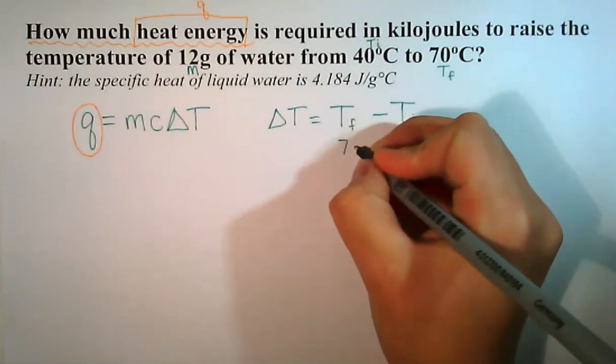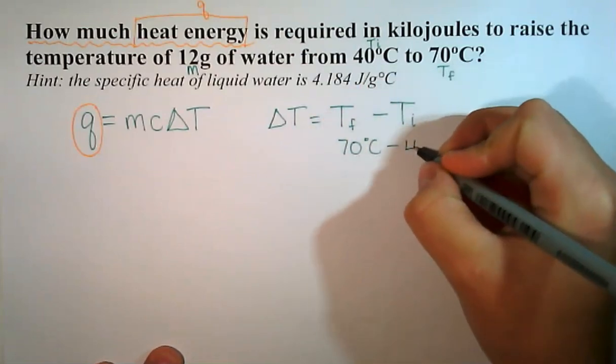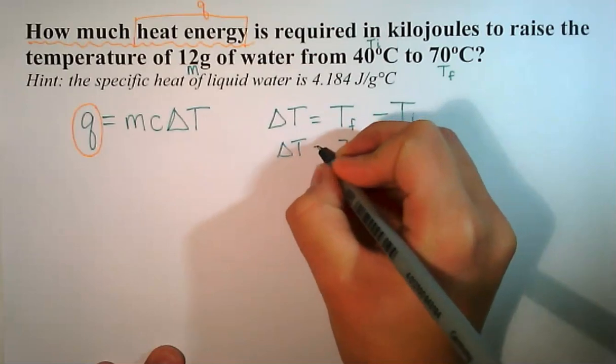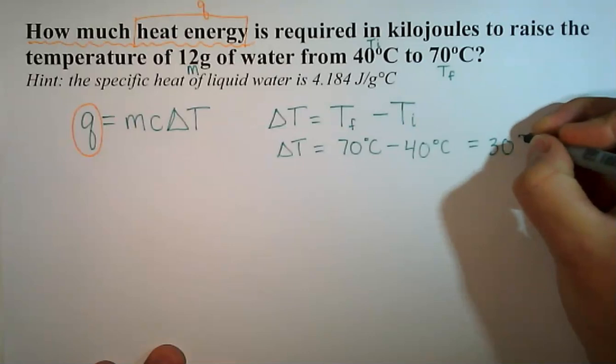Our T final is 70 degrees Celsius minus our T initial, which is 40 degrees Celsius, and that equals delta T. So 70 minus 40 is 30 degrees Celsius.